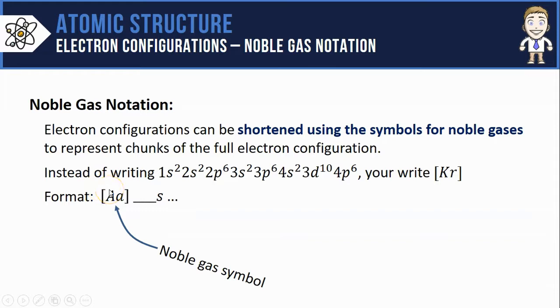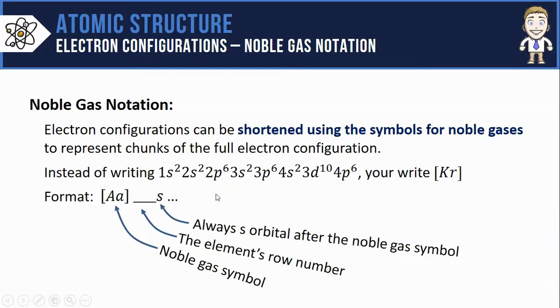Following that noble gas symbol to get the configuration correct for the element you're trying to write, it's always going to be an s orbital, and the way you tell which s orbital, whether it's 2s or 7s, is to go by the element's row number. The last part of the configuration is simply the rest of it to get up to the proper electron count.